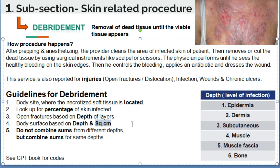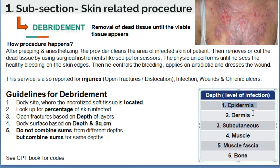The last and most important guideline for the debridement subsection is: do not combine sums from different depths. For example, skin is one organ. If on the left hand side the physician debrided up to dermis — 20 square centimeters — and on the right side debrided up to muscle — 20 square centimeters — you should not add these two together because the depths are different.